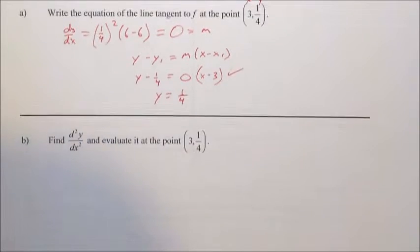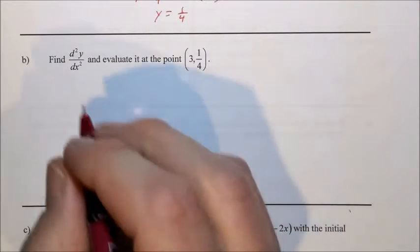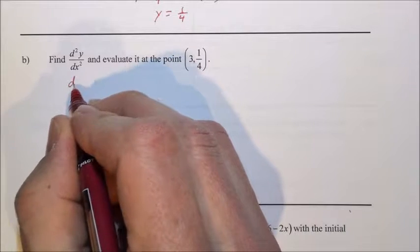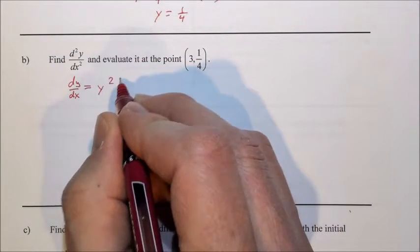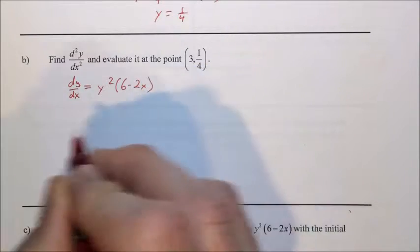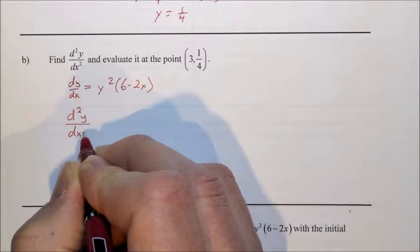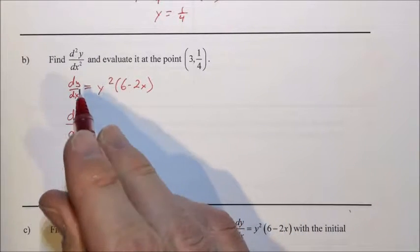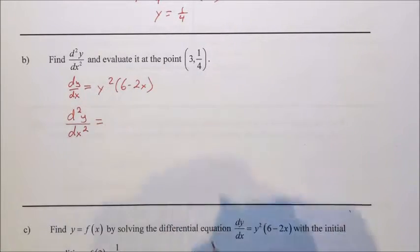Let's scroll up. Now we have to find the second derivative and evaluate it at the point (3, 1/4). So dy/dx is equal to y squared times 6 minus 2x.